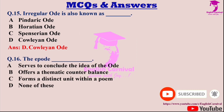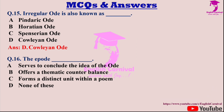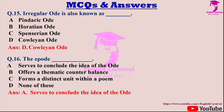Question sixteen: The epode — dash. Options are A: Serves to conclude the idea of the ode; B: Offers a thematic content balance; C: Forms a distinct unit within a poem; and D: None of these. The correct answer is A — it serves to conclude the idea of the ode.